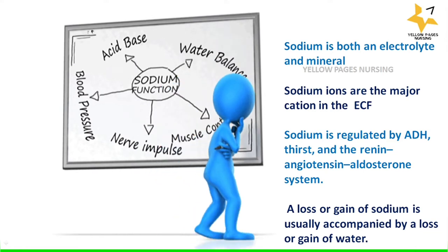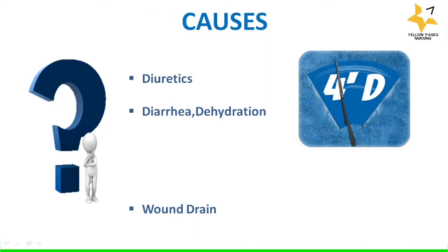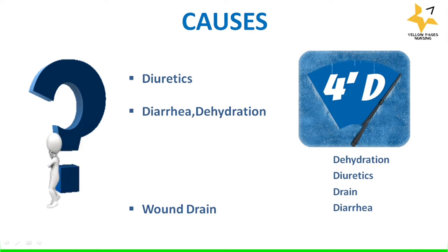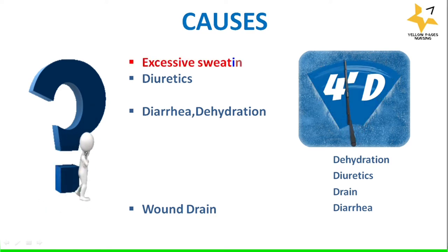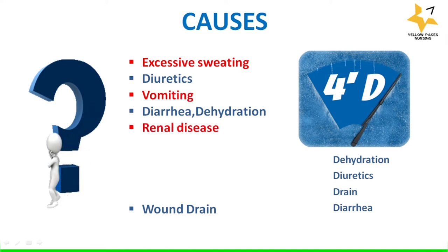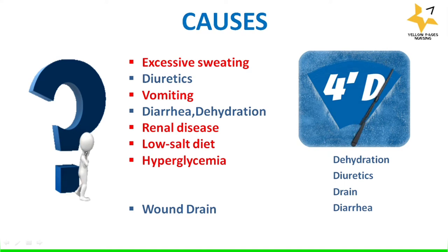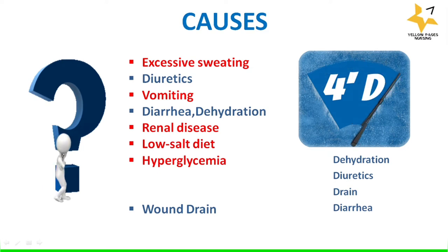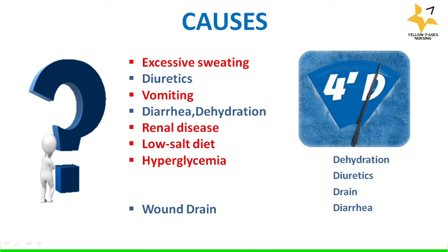How is hyponatremia caused? We can remember the main causes in four: dehydration, diuresis, drainage, and diarrhea. Some more causes are excessive sweating, vomiting, renal diseases, and low salt diet. Hyperglycemia also leads to hyponatremia — in hyperglycemia, water is moved out of the cells, subsequently causing a reduction of sodium levels in the blood, and hence it is called dilutional hyponatremia.